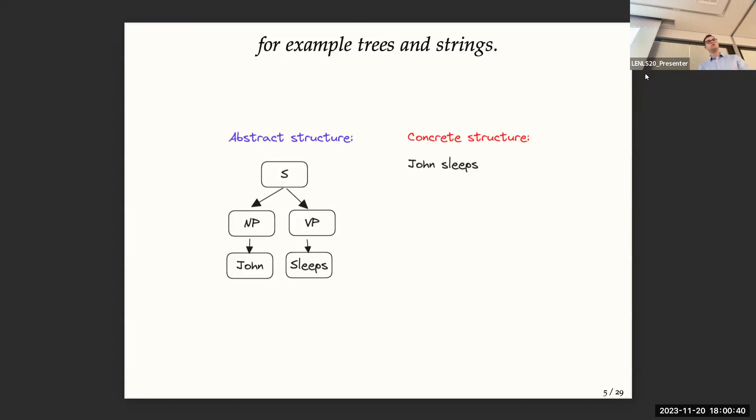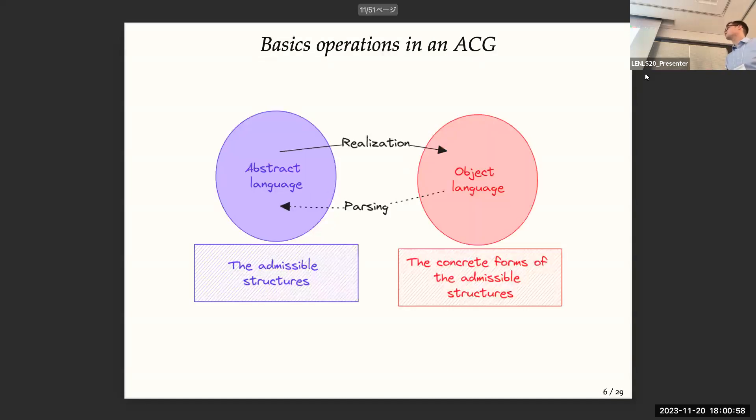For example, you can have a syntactic tree in the abstract structure and a string in the object in the concrete structure. It can also be semantic or many other things. So we have two operations in ACG. You have the realization, which is going from an abstract term to a compression of this term, and you have also parsing, which finds the antecedent of an object term.